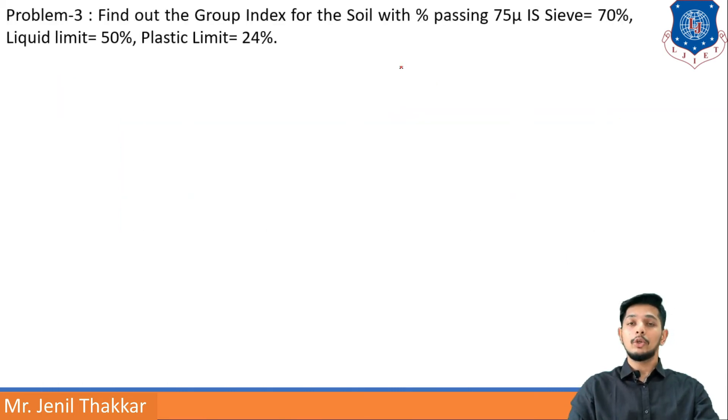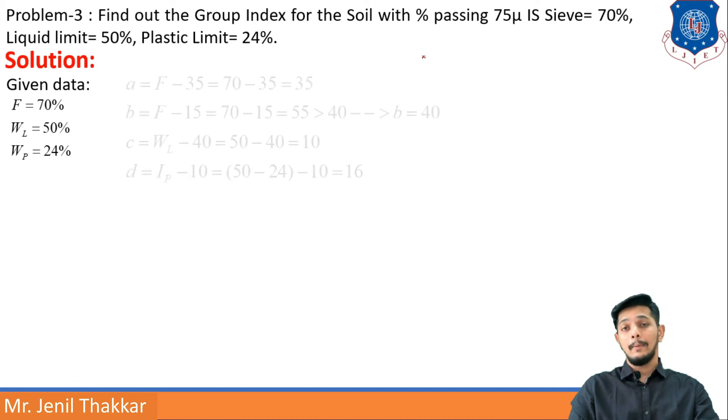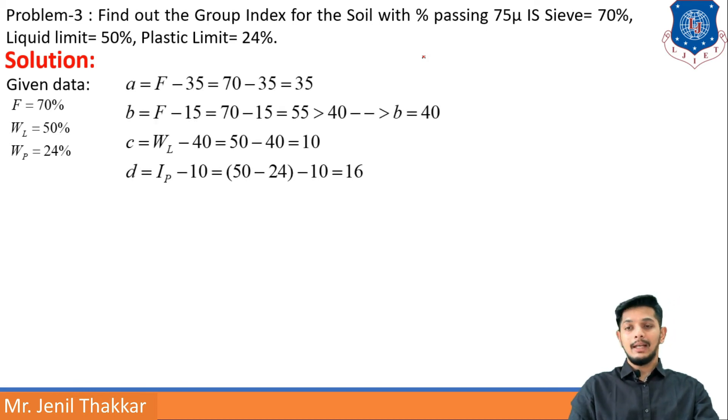Problem 3: Find out the group index for soil with percentage passing 75 micron IS sieve that is 70%, liquid limit is 50%, and plastic limit is 24%. Given data: F = 70%, WL = 50%, WP = 24%. Now we want to find out group index, so we have to find out A, B, C, D.